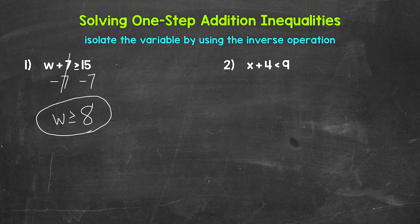So any value greater than or equal to eight is a solution of this inequality — it makes it true. Let's check a solution to make sure we are correct. We can't check every value greater than or equal to eight; that would be impossible, as we have an infinite amount of solutions. So we can check one value. Let's use 10.